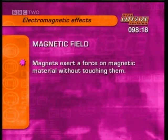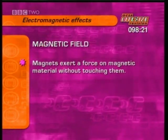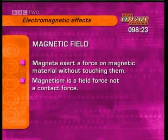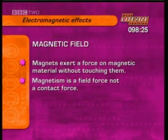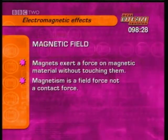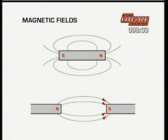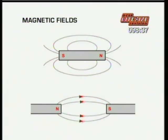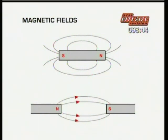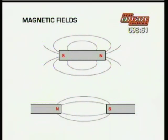We saw that magnets can exert a force on magnetic materials without touching them, so magnetism is a field force, not a contact force. The area around a magnet where the magnetic force acts is called a magnetic field. Lines of force point away from the north pole towards the south pole. Lines of force are closer together where the field is stronger and further apart where the field is weaker. Opposite poles attract each other, while like poles repel each other.